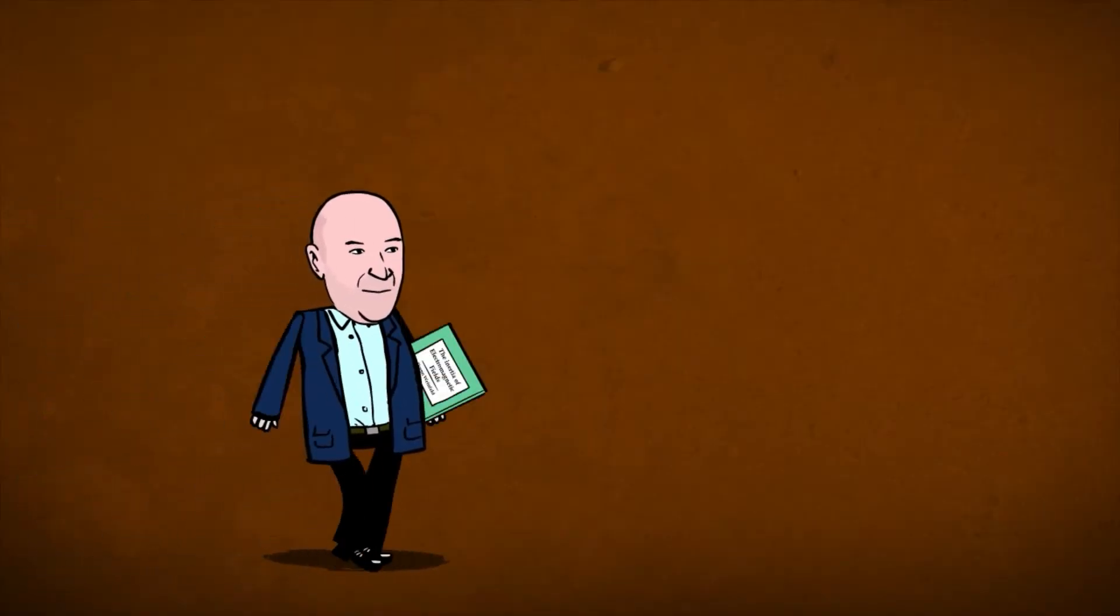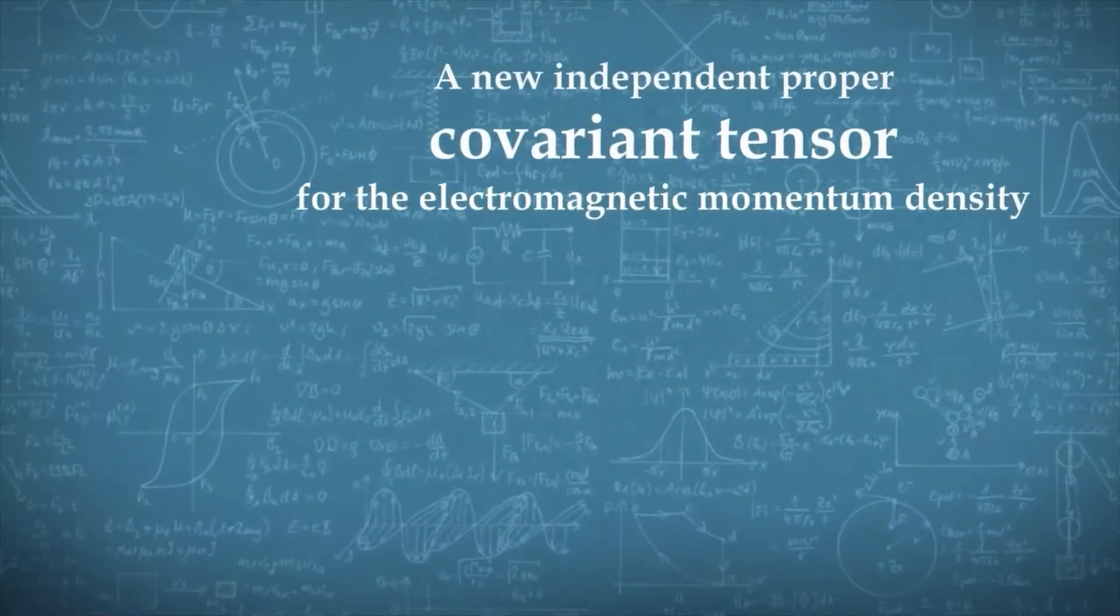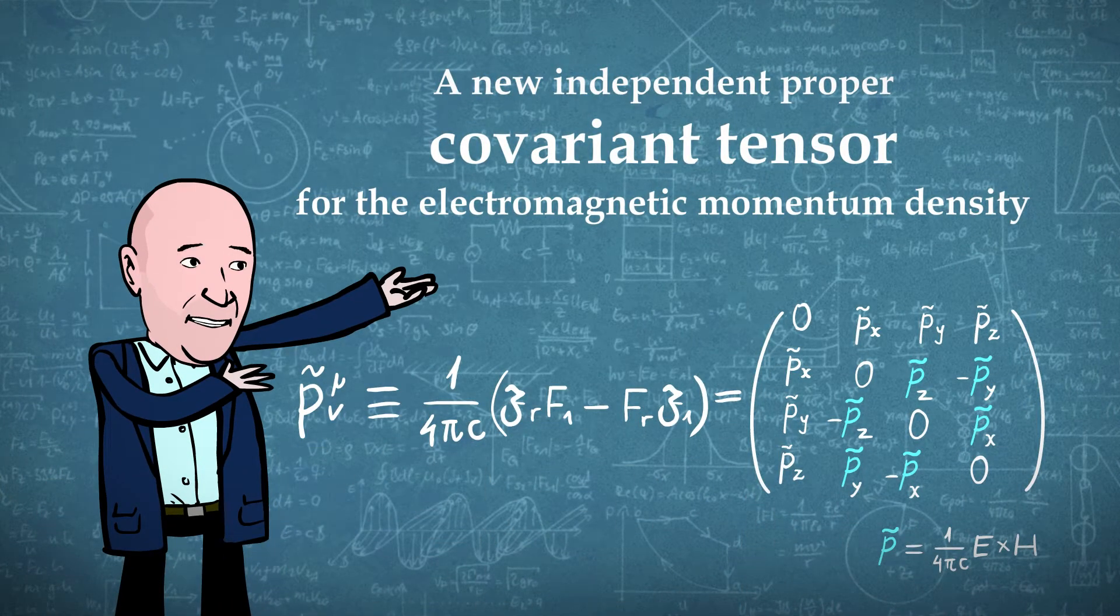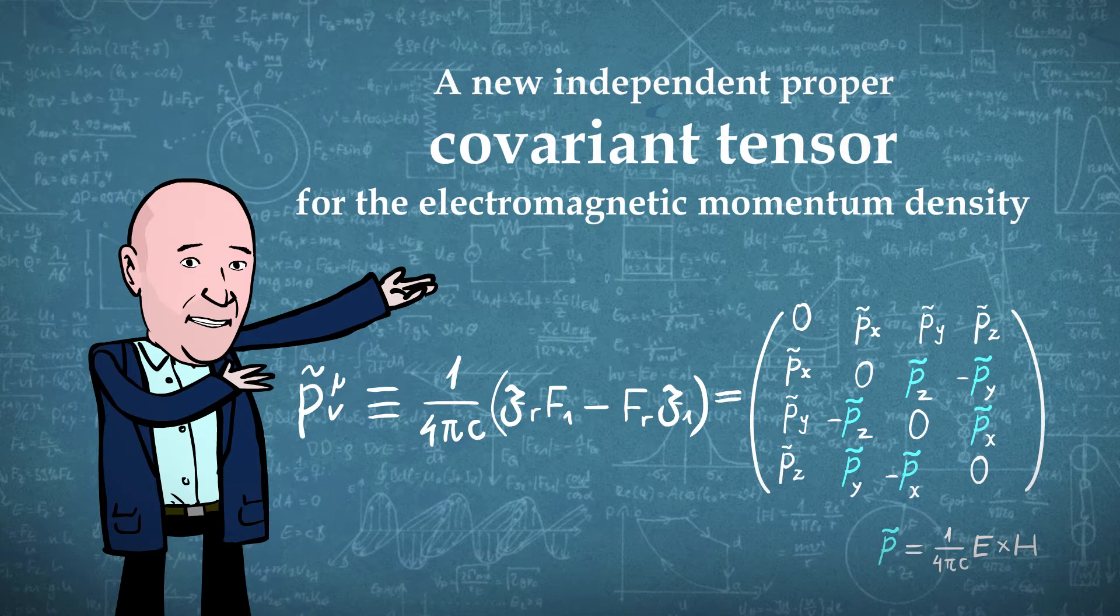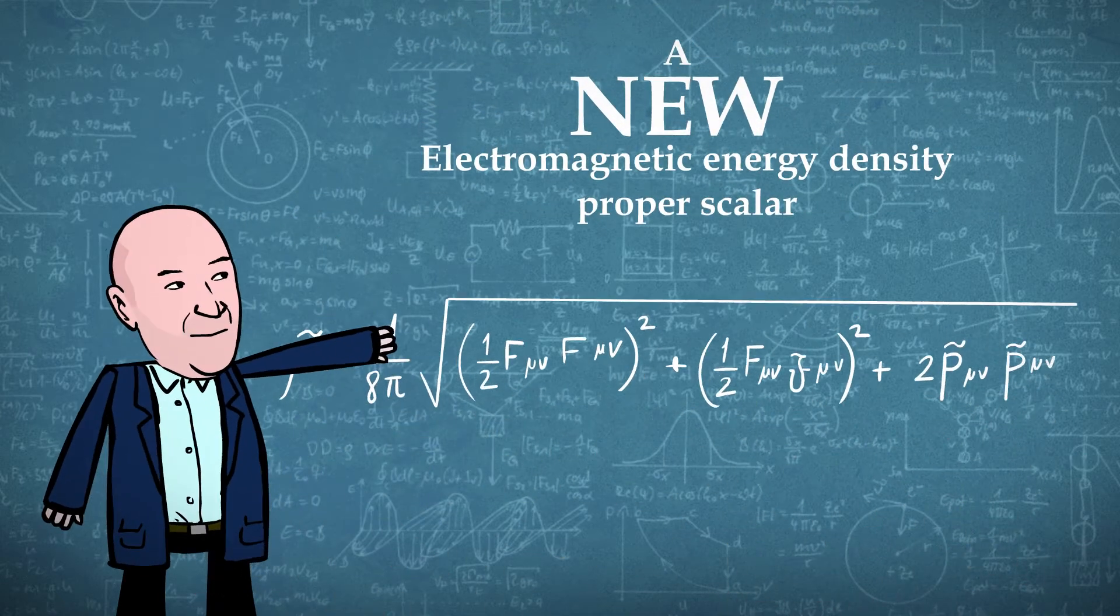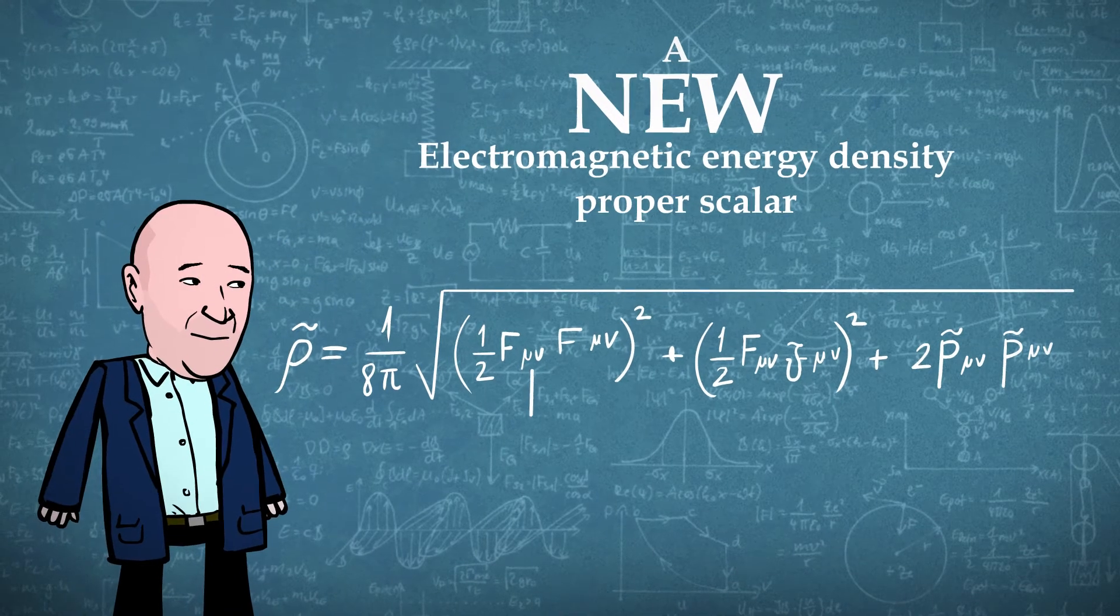Theoretical physicist Doron Wainfelt proposes a solution in a new theoretical paper. In his paper, Doron suggests that we define a new independent proper covariant tensor for the electromagnetic momentum density, and we define a new electromagnetic energy density proper scalar, where F and F special are the known electromagnetic tensor and its dual.